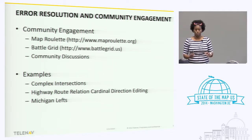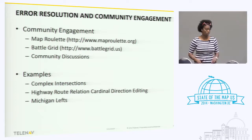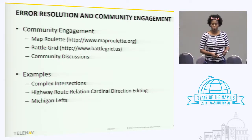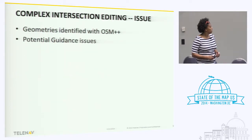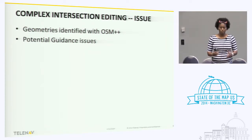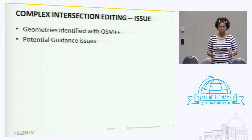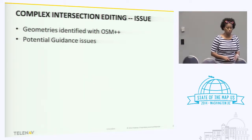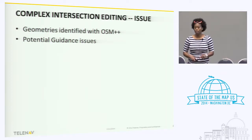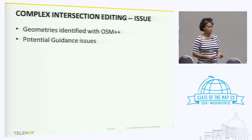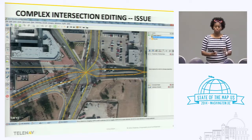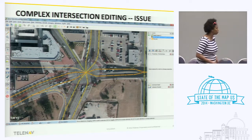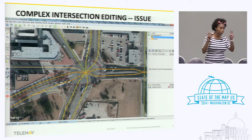The three cases are: complex intersections, which we initially called braided roads; highway route relation cardinal directions; and Michigan lefts. We identify errors with OSM++ and complex intersections were identified. These intersections could have potential guidance errors. This is what we usually call a braided road, or complex intersection — you can use the terms interchangeably.